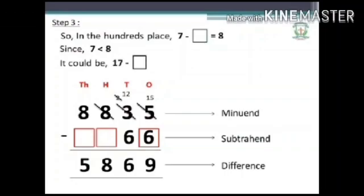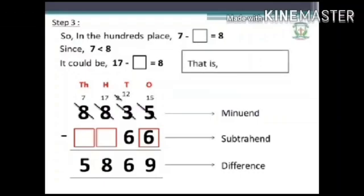...it could be 17 minus dash is equal to 8 — that is, borrowing 10 hundreds from 8 thousands, leaving 7 thousands in the thousands column. That is 17 minus 8 is equal to 9. Write 9 in the hundreds missing column.